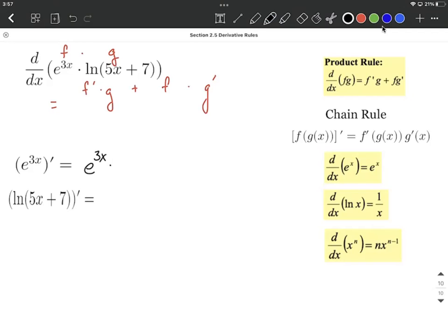Then we multiply that by the derivative of the inner function, the 3x in this case. So the derivative of 3x is just going to be 3 because that's a linear function. All right, that can be filled in for the derivative of e to the 3x, which will go right here: e to the 3x times 3.